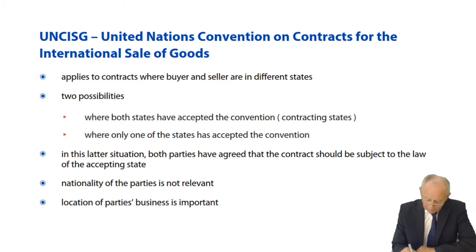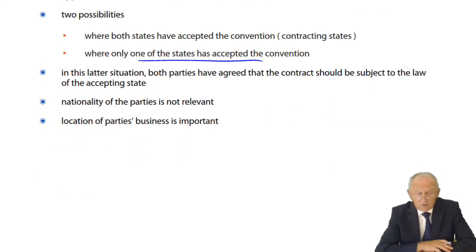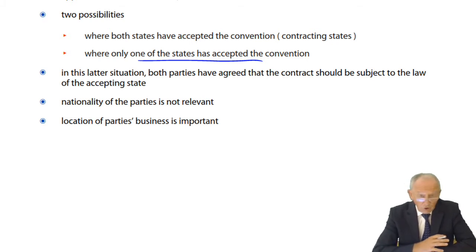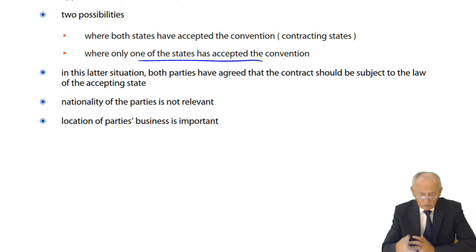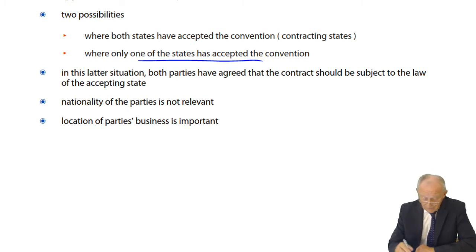Where only one state has accepted the convention, the contract between the person from the accepting state and the person from the non-accepting state must agree at the time of contract that, in the event of a dispute, they shall look at the United Nations Convention on Contracts for the International Sale of Goods as a means of resolving that dispute. So nationality is not important — the location of the party's business is important.